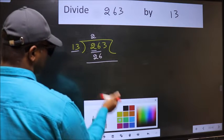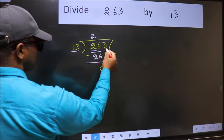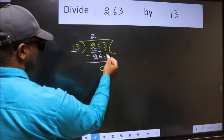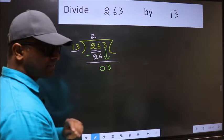Now we should subtract. 26 minus 26, 0. After this, bring down the beside number. So 3 down. After this step, the mistake happens.